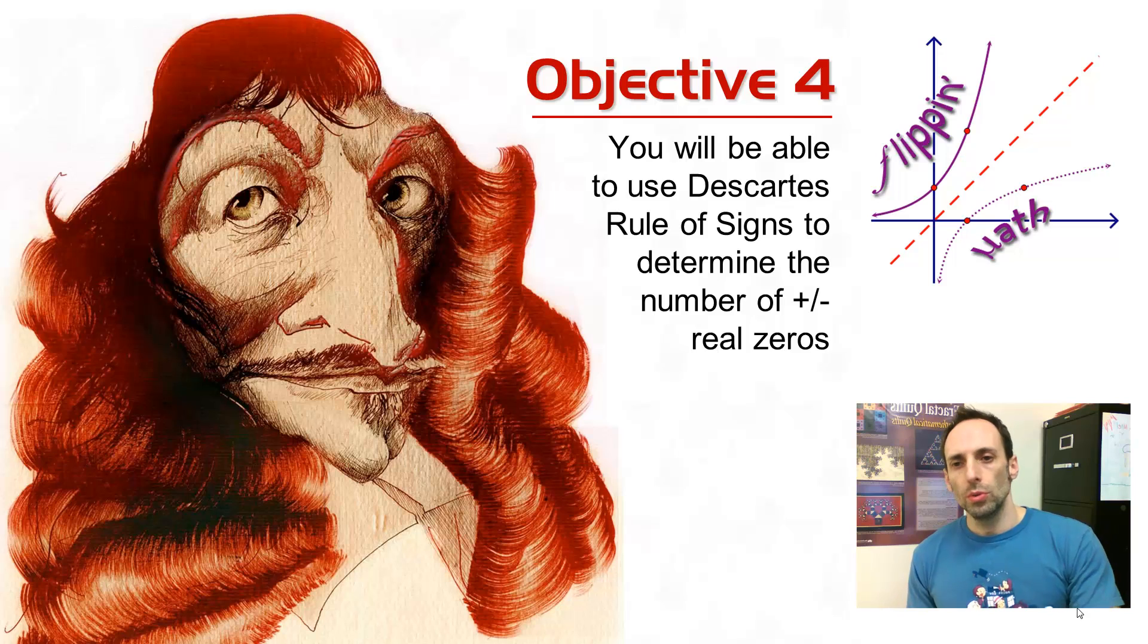So, you're going to be able to use Descartes' rule of signs to help us figure out the number of possible positive or negative real zeros. It's going to be another one of the shortcuts that we could use when we have a list of possibilities, rational zeros, that we could choose from.